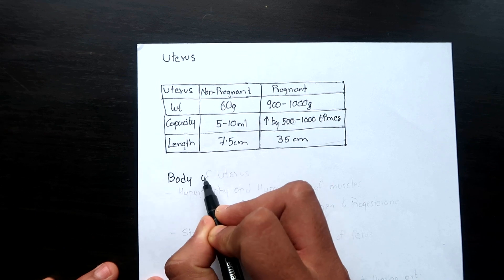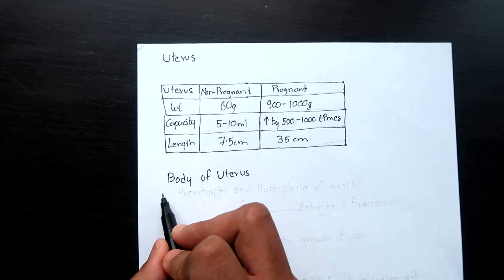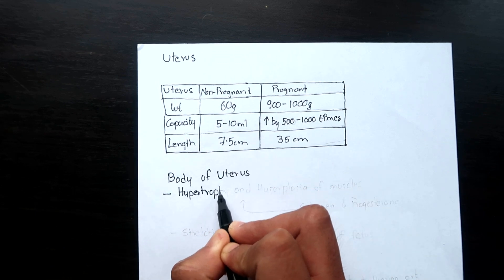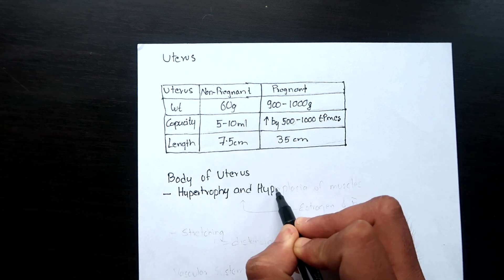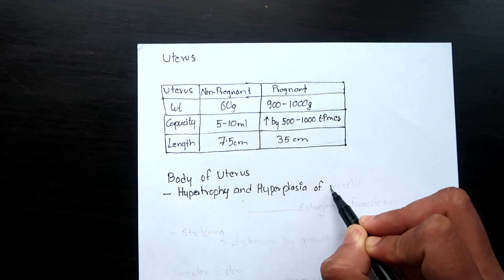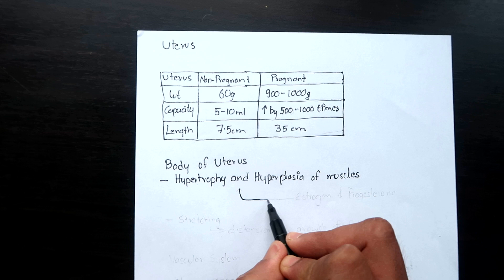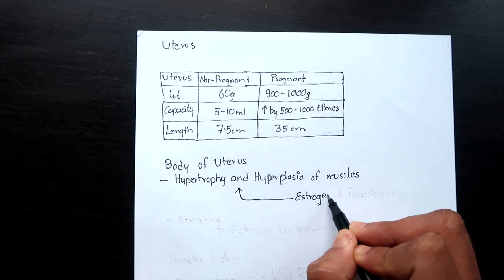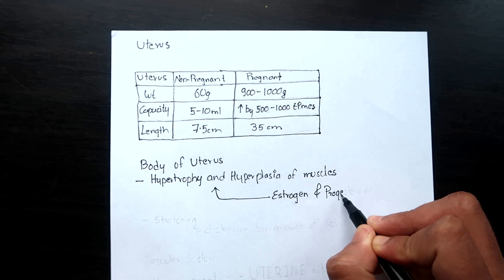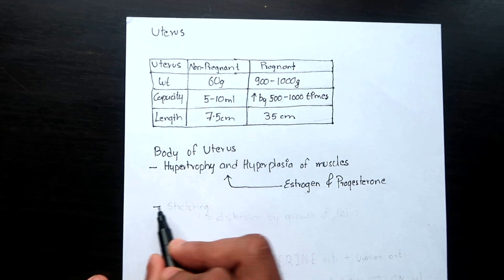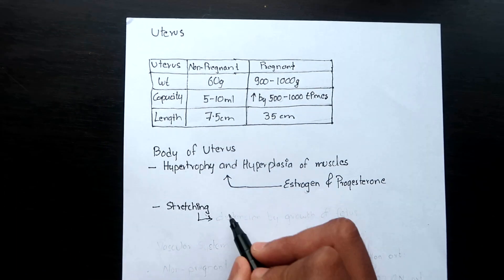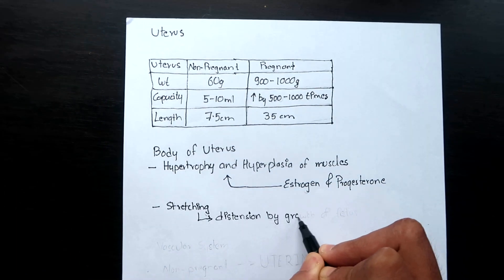At the body of the uterus there is increase in growth and enlargement. This is due to hypertrophy and hyperplasia of the uterine muscles. These occur under the influence of hormones estrogen and progesterone. Also the muscle fibers further stretch due to distension by the growing fetus.